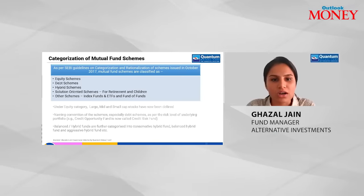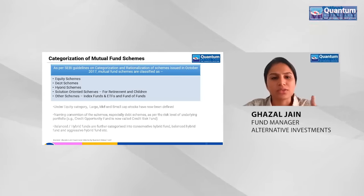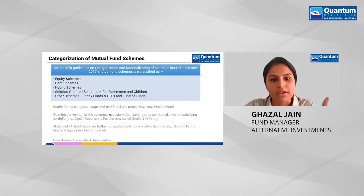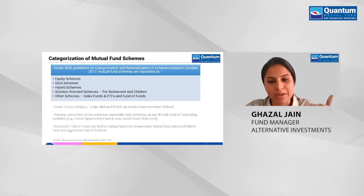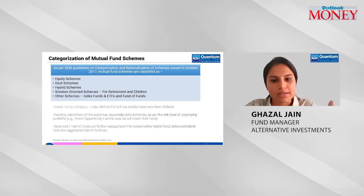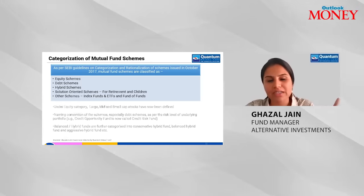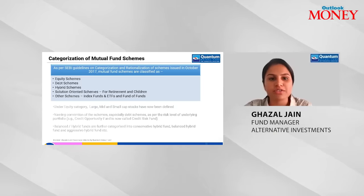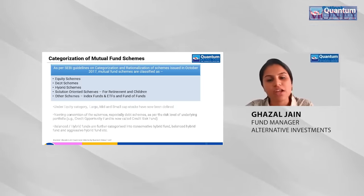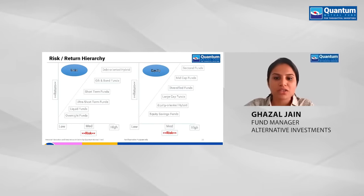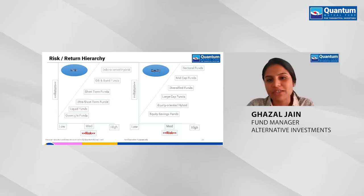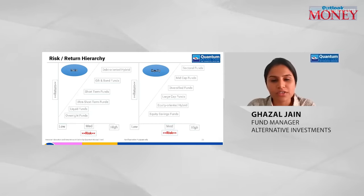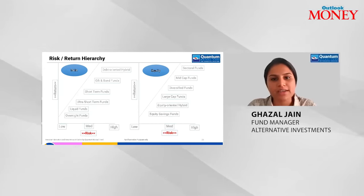SEBI has defined this categorization, including large, mid, and small cap stocks under equity. Balanced or hybrid funds, once a vague term, are now further classified into conservative hybrid (low equity exposure), balanced hybrid (50-50 equity and debt), and aggressive hybrid (higher equity than debt). There are many types of debt and equity funds mapped by expected return and risk. In debt, shorter-term funds like overnight, liquid, and ultra short-term funds have lower risk and lower return. Longer duration gilt and bond funds have higher risk and higher return. In equity, large cap funds offer medium risk and return, while mid and small cap funds are higher risk with higher return, and sectoral funds are very high risk and return.